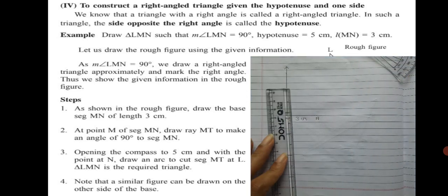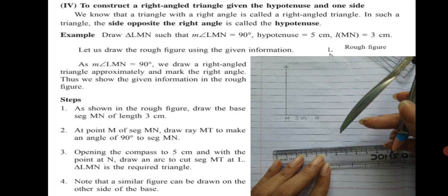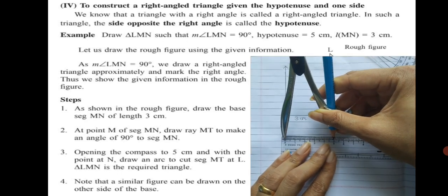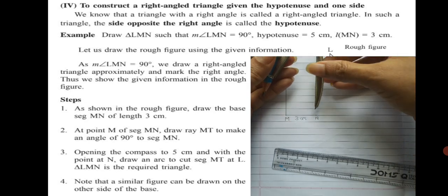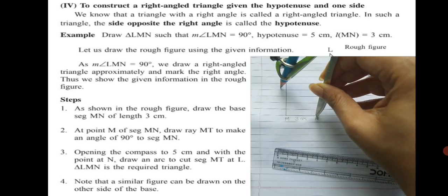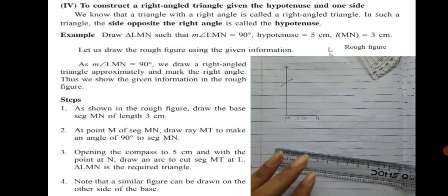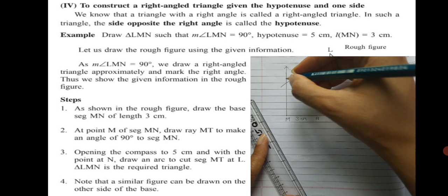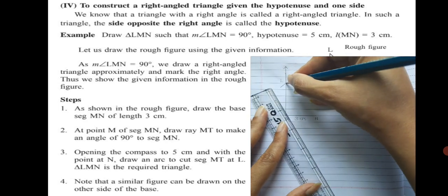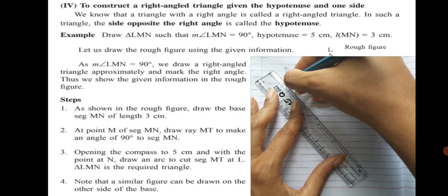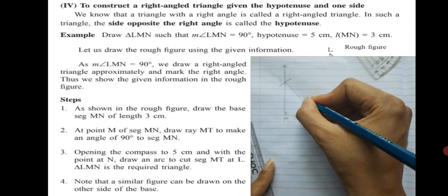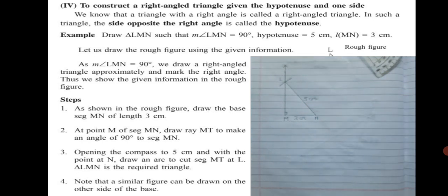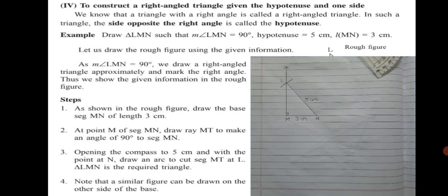Now we need to draw side LN, which is the hypotenuse given as 5 cm. We take 5 cm in our compass and, since LN is 5 cm, we keep the pointer at N — not at M. We mark an arc on the given ray from point M, and that point of intersection of the arc on the ray is point L. Join point L to point N and segment LN completes the right angle triangle. Segment LN is of measurement 5 cm, so write the measurement on side LN.